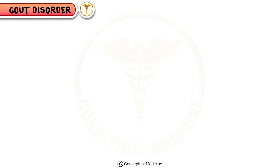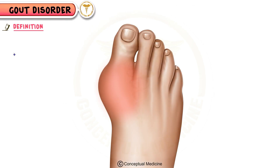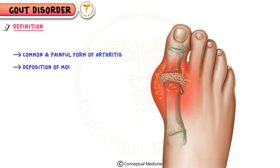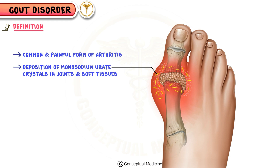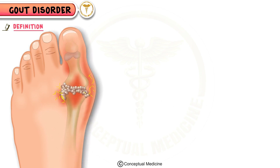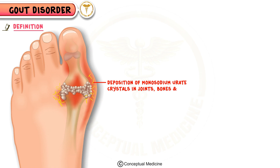Gout is a common and painful form of arthritis caused by the deposition of monosodium urate crystals in joints, bones, and soft tissues.